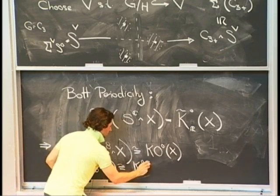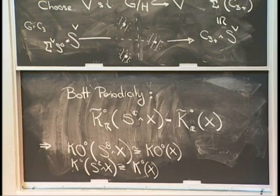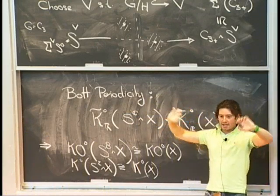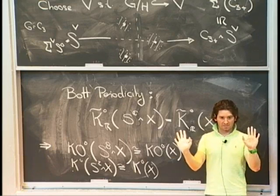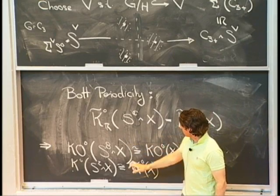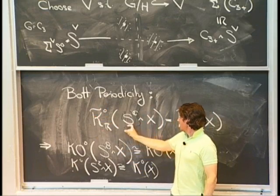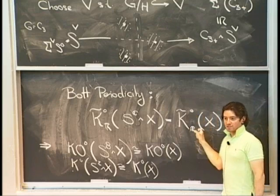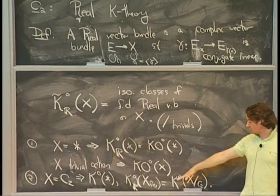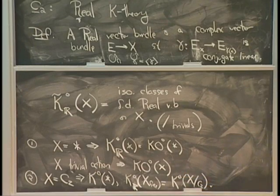From this you can deduce that Real K-theory is 8-periodic and complex K-theory is 2-periodic. The complex K-theory periodicity is actually much easier: just replace every instance of X with C2+ smash X to free up the action. Once I've freed up the action, I can't tell the difference between the representation sphere and a trivial sphere of the same underlying dimension. So when I free up the action, this sphere becomes just the 2-sphere, and I get that the Real K-theory of C2+ smash S^2 smash X equals the Real K-theory of C2+ smash X. Applying this, KU of the second suspension of X is KU of X.